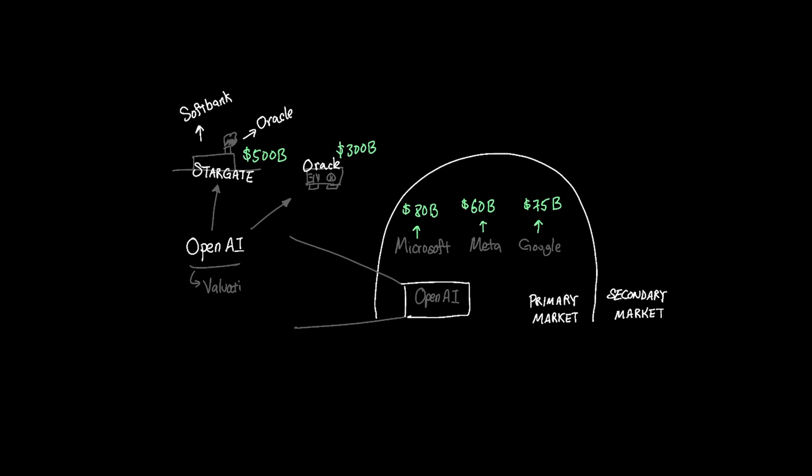And OpenAI recently signed a $300 billion agreement with Oracle to purchase computing power for the next five years. And keep in mind that OpenAI's most recent valuation is $300 billion. So not only is Sam Altman saying that we are in an AI bubble, they are also spending $300 billion in the Oracle deal and much more in their Stargate facility.